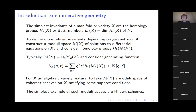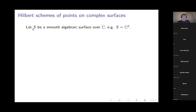Let S be a smooth algebraic surface over ℂ. For what I'm about to say, it's perfectly fine to just think that S is ℂ². This will still be interesting in that simplest example, and many of the things I'll say will be true of more general varieties.